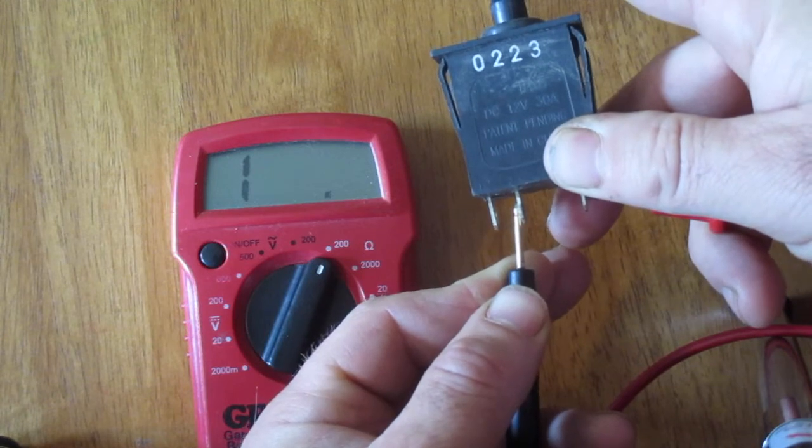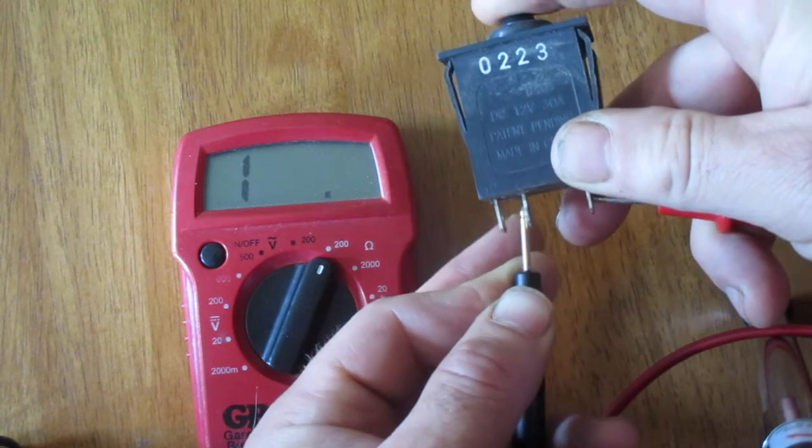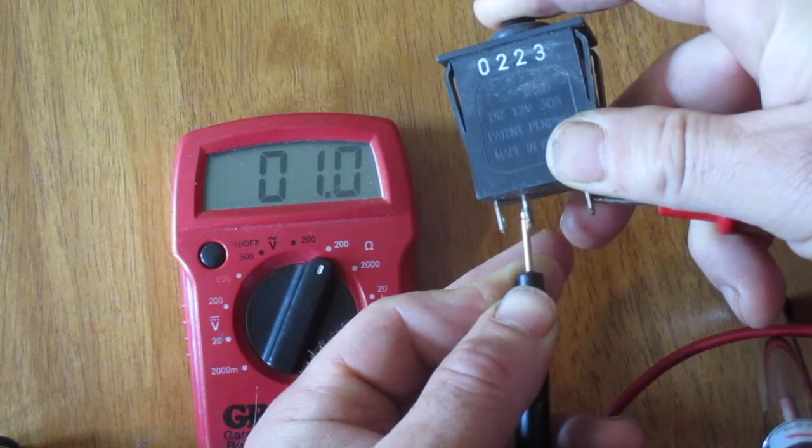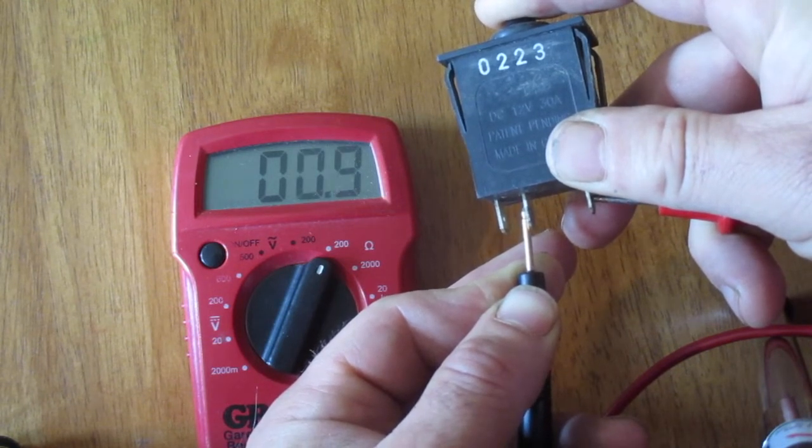When I depress this, I should get a reading of around 1 over here, which I am. When I depress it and let it go, it should go back to no continuity.